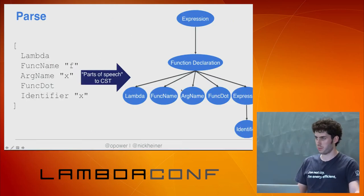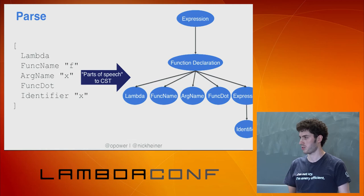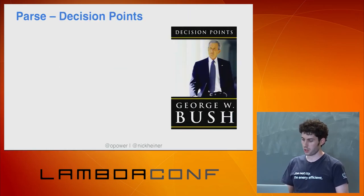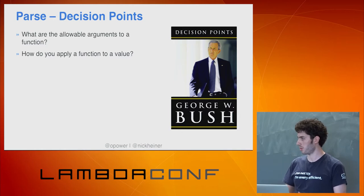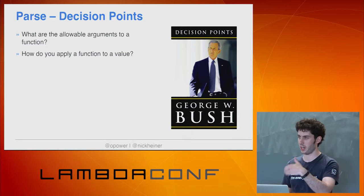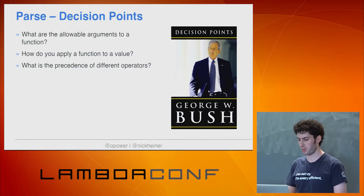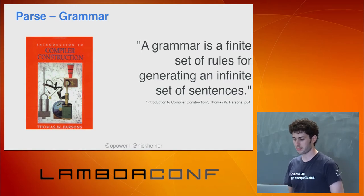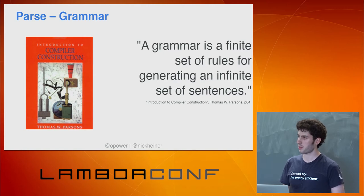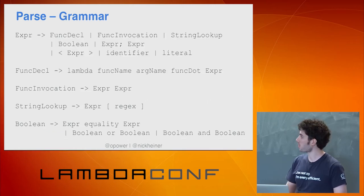After we do that, we then need to start parsing the program to understand how all these parts relate to each other. That produces what's called the CST, or the concrete syntax tree. Decisions here include: what are the allowable arguments to a function, how do you apply a function to a value, what are the precedences of different operators — so if you have A plus B times C, how does that actually get evaluated? In order to do this parsing, we're going to need a grammar. A grammar is a finite set of rules for generating an infinite set of sentences.